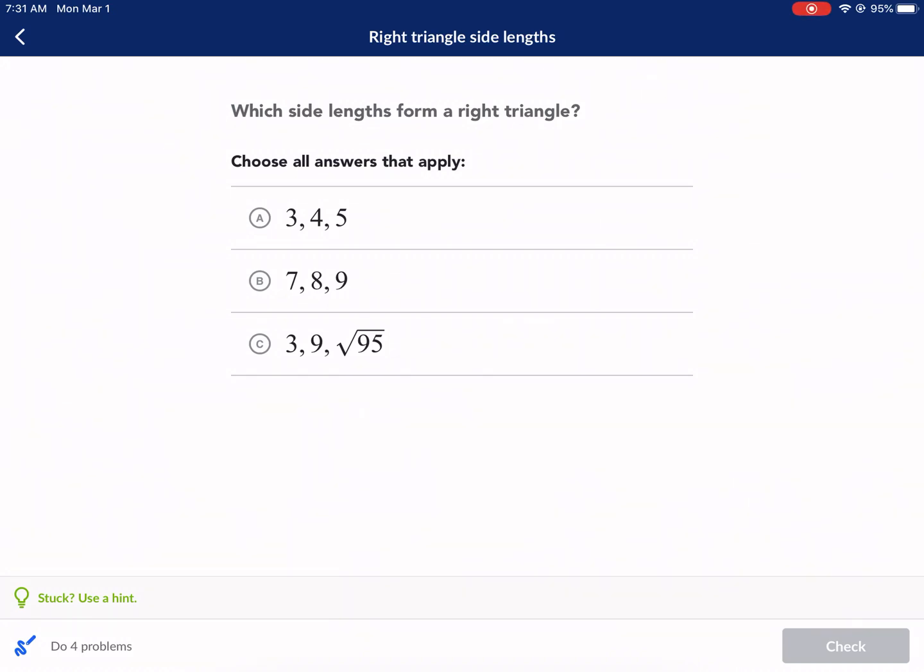Welcome everybody to a Khan Academy tutorial. We're doing right triangle side lengths today. So you use the Pythagorean theorem for this. Let's go ahead and jump right into it. We have which side lengths form a right triangle? Choose all answers that apply.